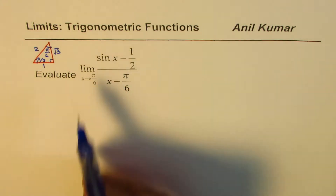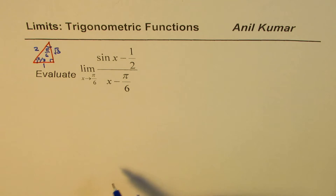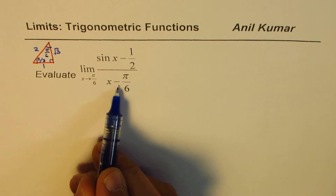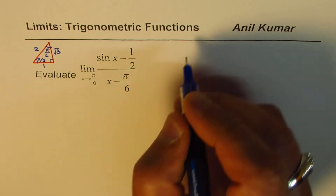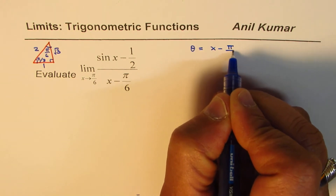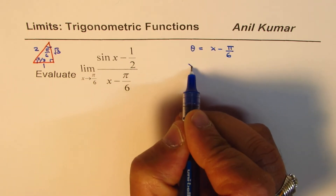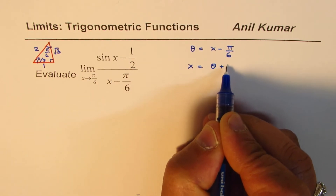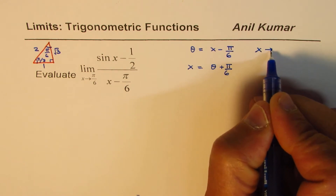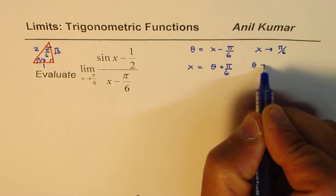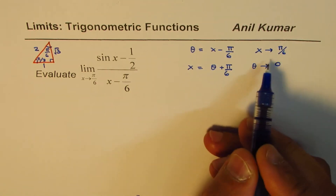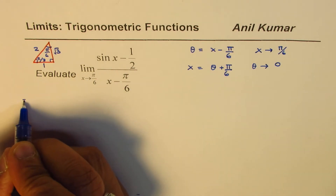Since we have a 0/0 indeterminate form, we need to do some trigonometric simplification. Let's begin with a substitution: let θ = x - π/6. Then x = θ + π/6. Also, when x approaches π/6, θ approaches π/6 - π/6 = 0.